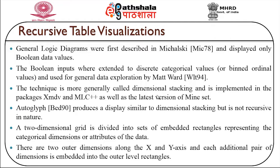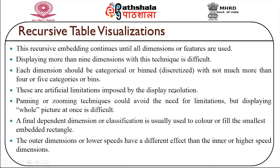A two-dimensional grid is divided into a set of embedded rectangles representing the categorical dimensions or attributes of the data. There are two outer dimensions along the x and y axis, and each additional pair of dimensions is embedded into the outer level rectangles. In recursive table visualization, this recursive embedding continues until all dimensions or features are used. Displaying more than 9 dimensions with this technique is usually very difficult. Each dimension should be categorical or binned — a discretized value with not more than 4 or 5 categories or bins.